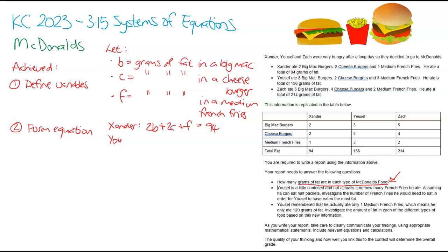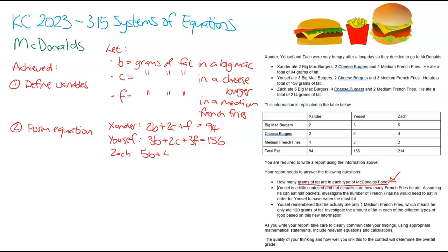We're now going to do the same for Yusef: 3B being the Big Macs, plus 2C being the cheeseburgers, plus 3F being the French fries - that gets me to 156. And then finally Zach's one. Zach was pretty hungry that day. Zach had 5 Big Macs, plus 4 cheeseburgers, plus 2 French fries, and that came to 214.